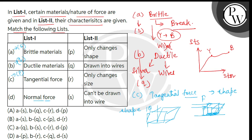अब D entry है normal force। Normal force किसी भी body पर लगेगा, तो मान लेते हैं a sphere। इस sphere पर normal force radius के along, यानी radial direction में apply होगा क्योंकि वो किसी भी surface पर perpendicular होता है। इसके कारण sphere का size छोटा हो जाएगा और उसका volume reduce हो जाएगा। So we can say that answer for D will be R.